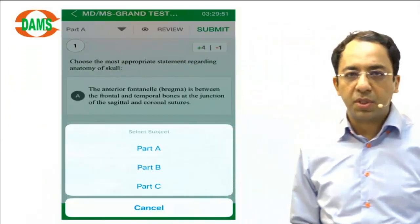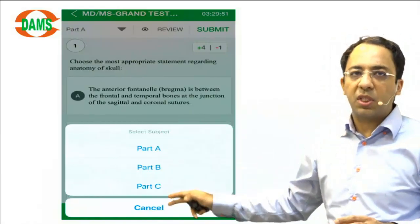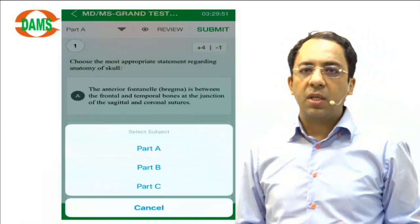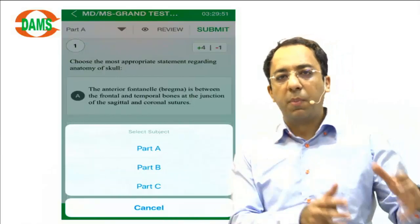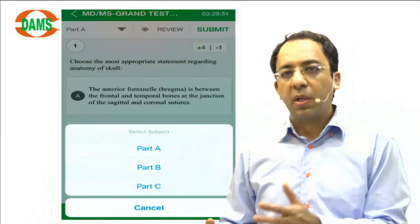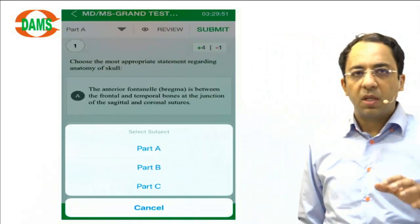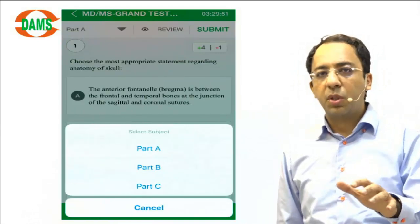This is how a DAMS grand test interface would look like. In the DAMS grand test you will see these three parts - Part A, Part B, Part C - just like you see in the real NEET exam. The real NEET exam is divided into three parts. Similarly, our grand test is divided into three parts: Part A is the first prof, Part B is the second prof plus PSM, Part C is the clinical sciences. This is how you select your parts just like you do in the real exam.